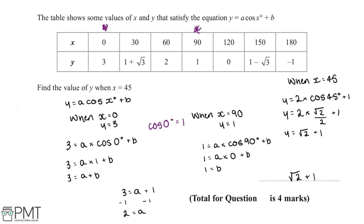This question is worth 4 marks: 1 mark for substituting in a known trigonometric ratio, a 2nd mark for forming two equations with a and b, a 3rd mark for working out the values of both a and b, and the 4th mark for working out the correct answer.